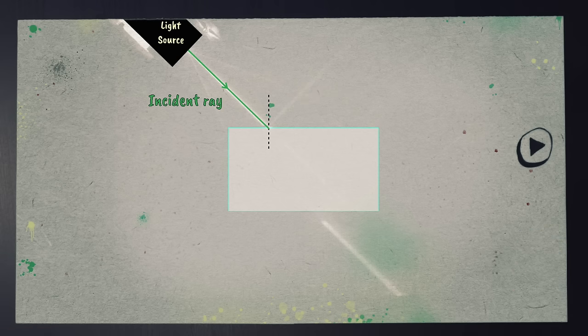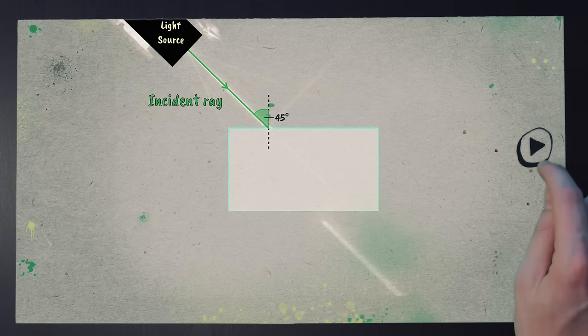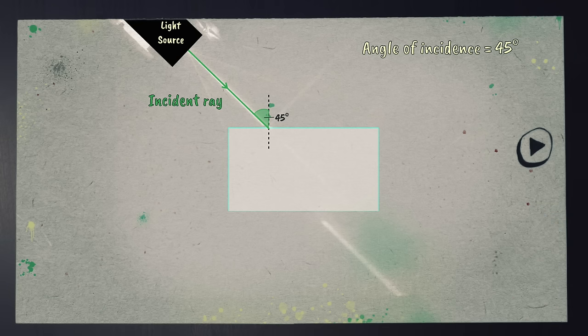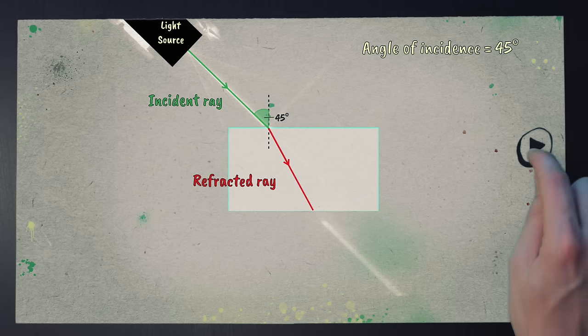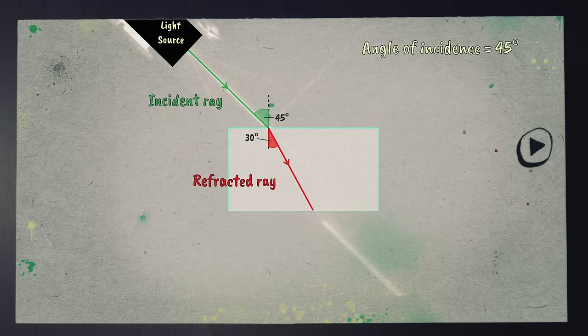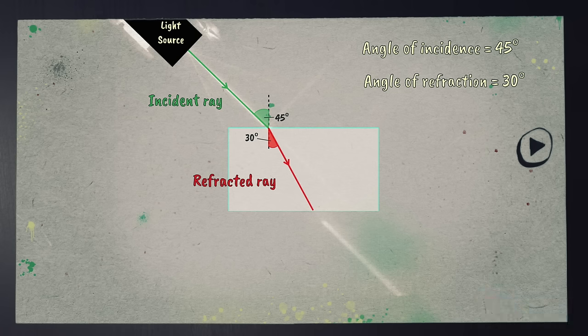Here the ray, known as the incident ray, reaches the plastic block at 45 degrees from the normal. This is the angle of incidence. The ray within the block, known as the refracted ray, moves through the plastic block at 30 degrees from the normal. This is called the angle of refraction.